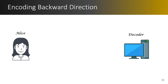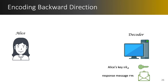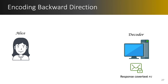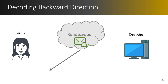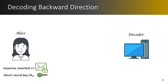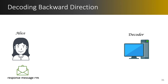A similar encoding and decoding process is done in the backward direction, where the encoding is initiated by the decoder using Alice's public key to encode the response message. After encoding, the decoder obtains the response cover text and sends it to the rendezvous. In the final decoding step, Alice retrieves the response cover text from the rendezvous and using her private key she reveals the response message, which is the desired bootstrapping information.